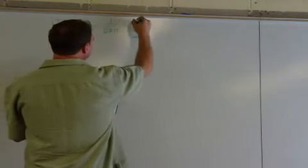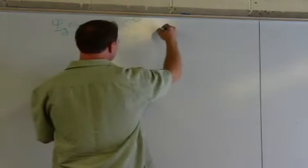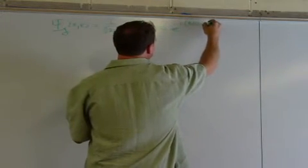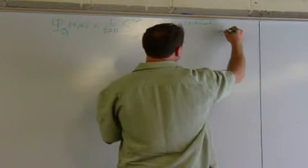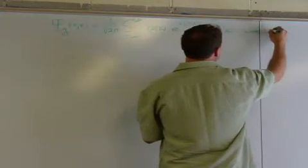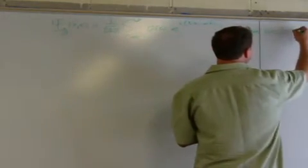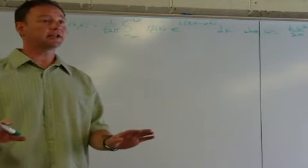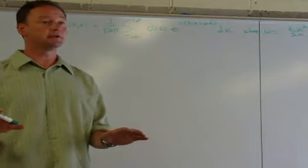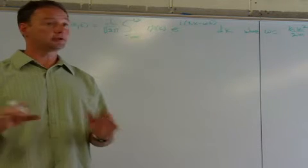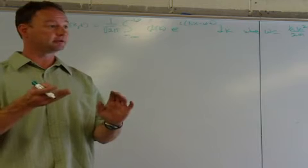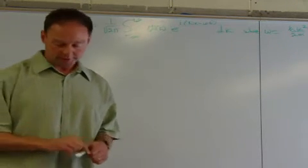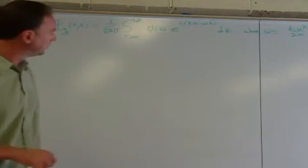We're going to start off right here with psi in general of x and t. This is top of page 65 equals 1 over the square root of 2 pi. And again, because I'm following the book, I'm going to throw in the 1 over the square root of 2 pi there. All right? You're going to follow the book. Yeah, I'm going to follow the book there. So here we go.